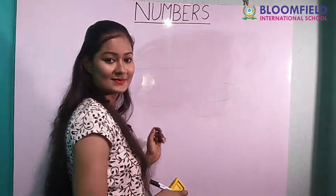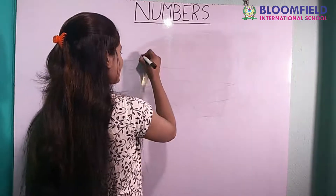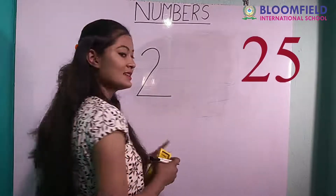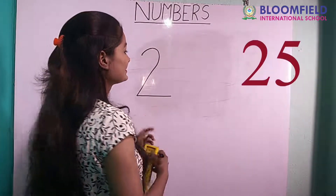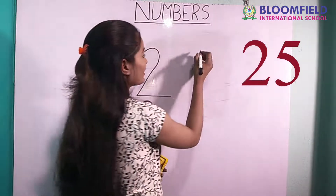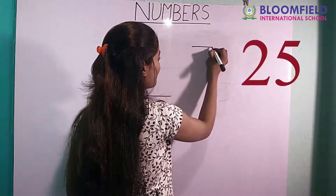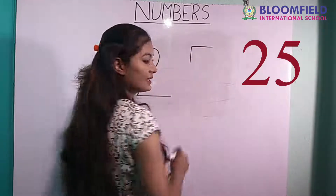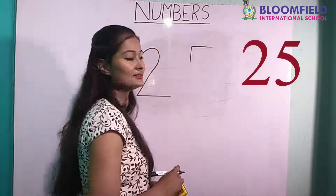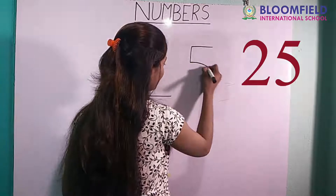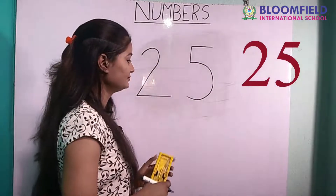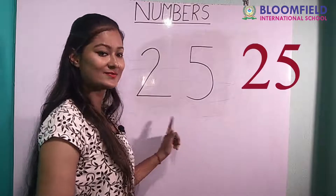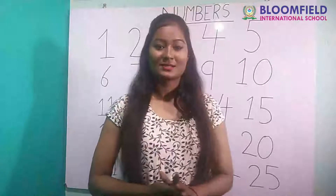Good. A small cut, then small slipping line. Small sleeping line, then small standing line, then a cut. Two five. Twenty five. Very good.